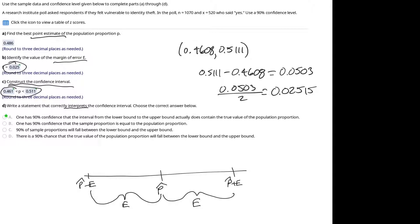So we can see then that the total width of this interval is 2E. So the margin of error would be half of that width.